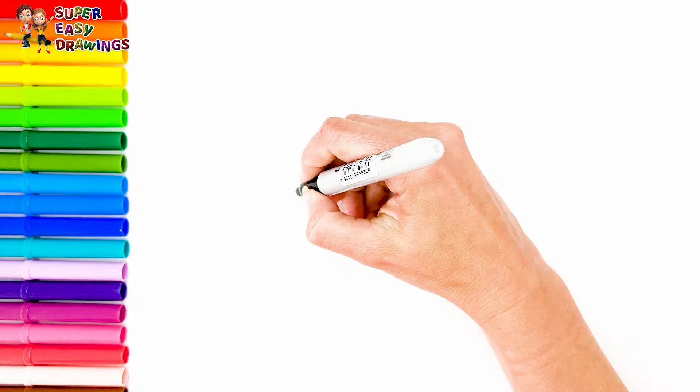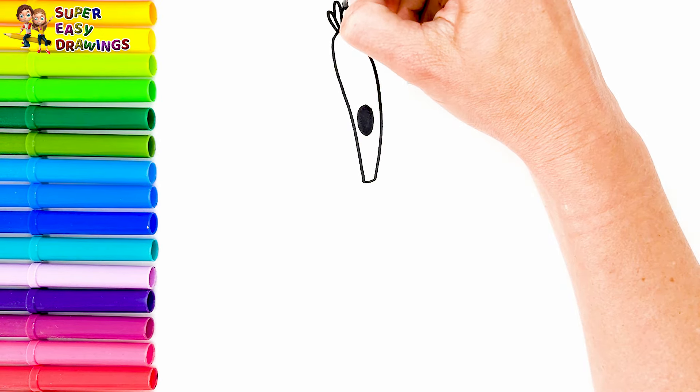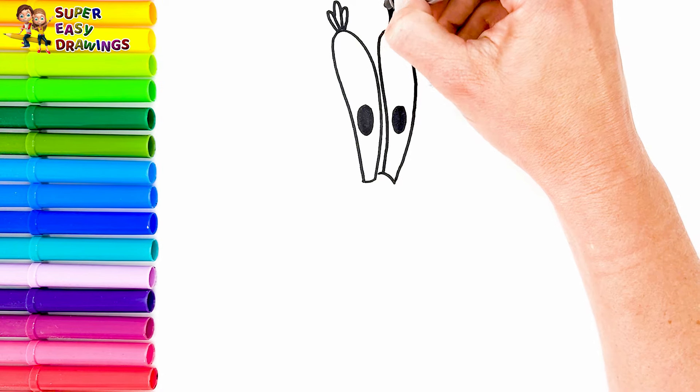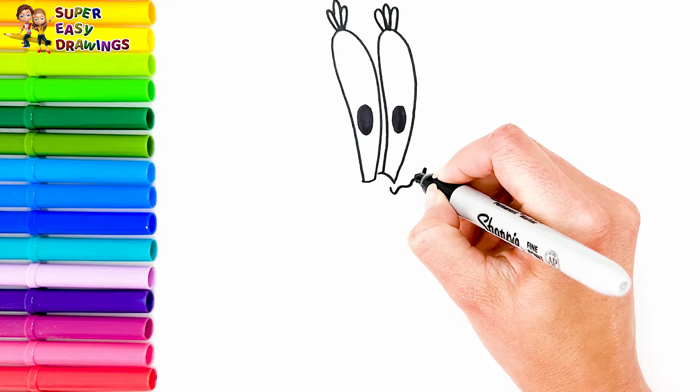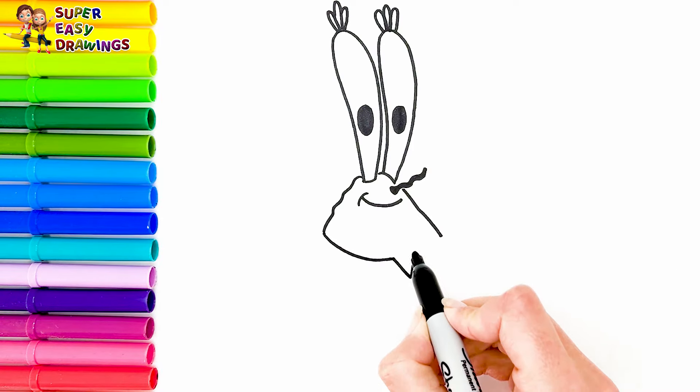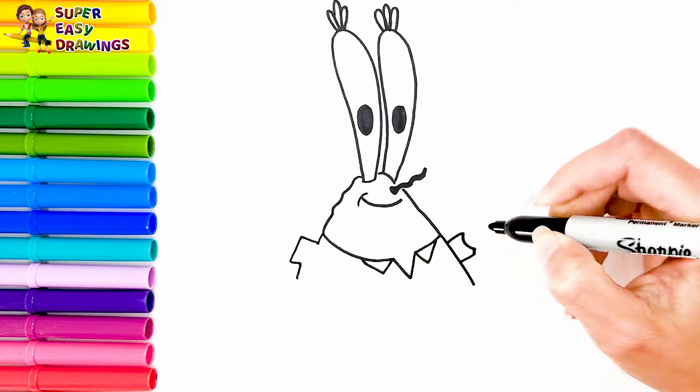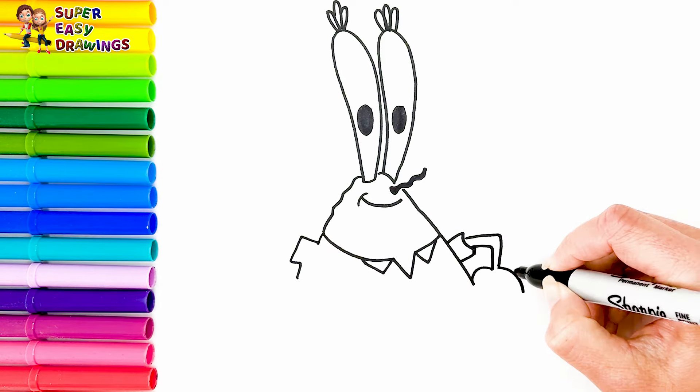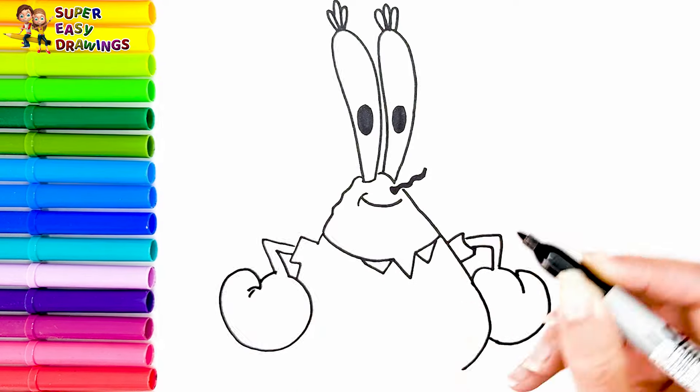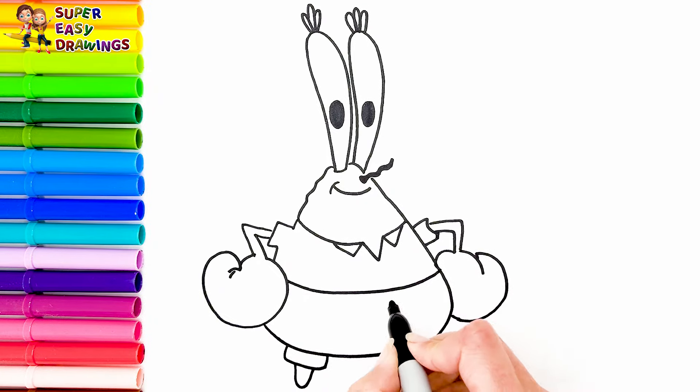Now let's draw Mr. Krabs. I draw his two big eyes. He is the owner and founder of the Krusty Krab restaurant. And his smiling mouth. Then I draw his head and body. As well as Spongebob's and Squidward's employer, I draw his body and finally his two legs.